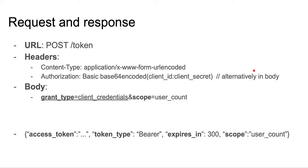Regarding the request and response: this request is always posted to the token endpoint. It's always form URL encoded, and the authorization header includes the base64 encoded client credentials. They can also be placed in the request body if that is preferred. At some authorization servers, you have to specify how your client is presenting the client credentials, and depending on that, you'll either place them in the authorization header or as client ID and client secret in the post body.